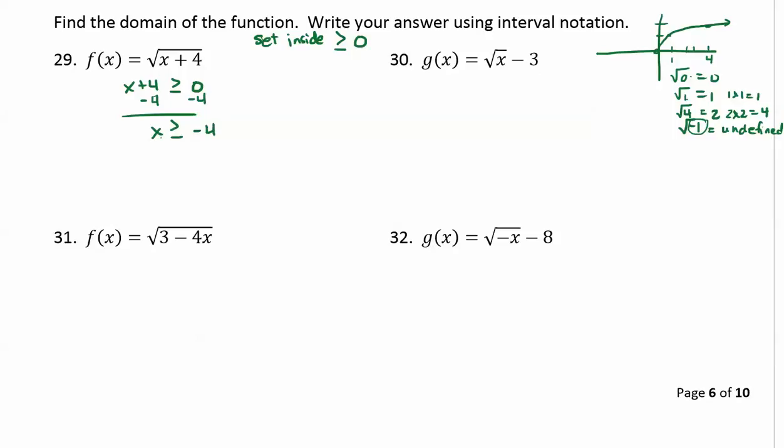So this says I can plug in any number starting with negative 4 and going greater than. To get the interval, it helps to see this on a number line. We're starting at negative 4 and going greater than. So we have one interval from negative 4 to infinity and we do brackets on negative 4 because it is closed in and included in the domain, and infinity has parentheses.